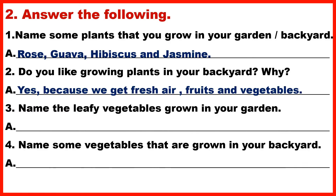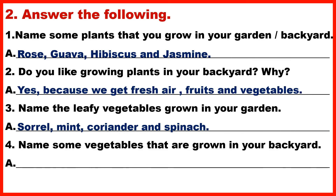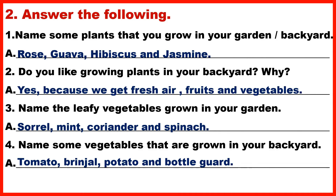Question 3: Name the leafy vegetables grown in your garden. Answer: Sorrel, Mint, Coriander and Spinach. Question 4: Name some vegetables that are grown in your backyard. Answer: Tomato, Brinjal, Potato and Bottle Gourd.